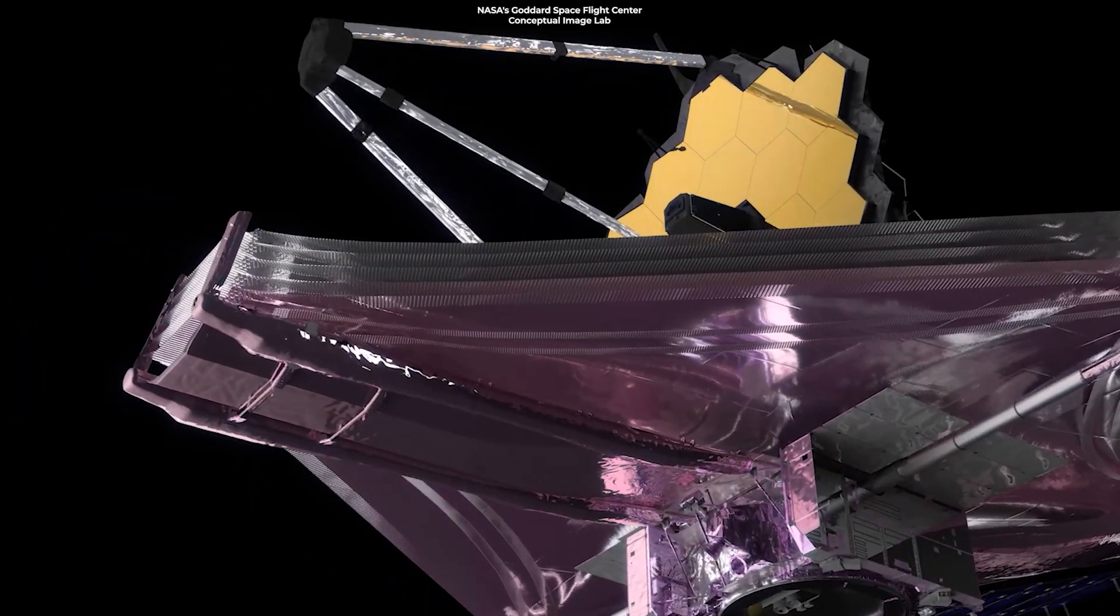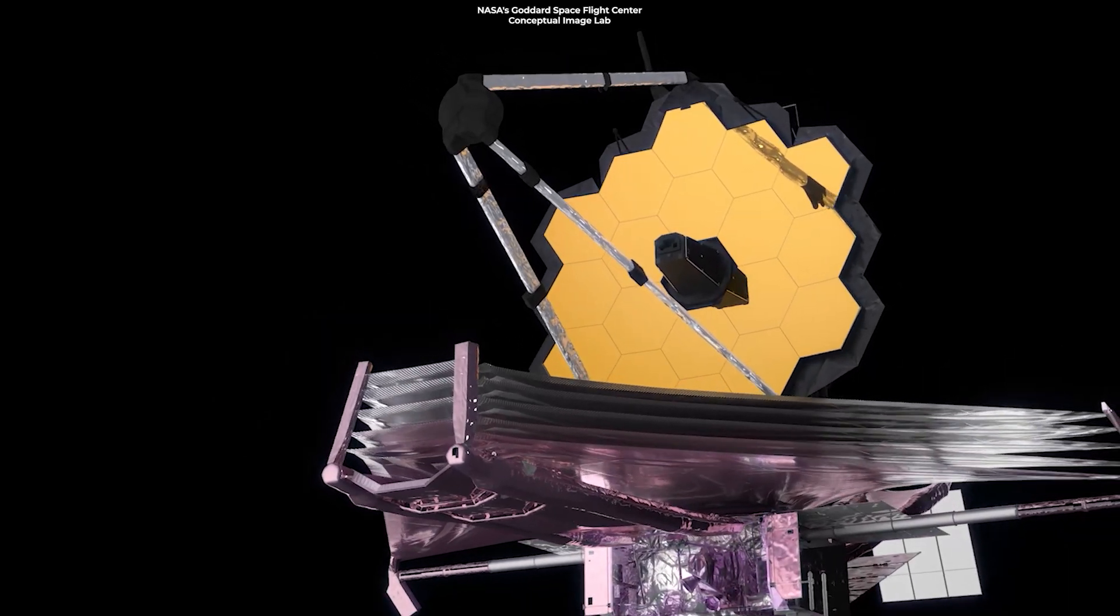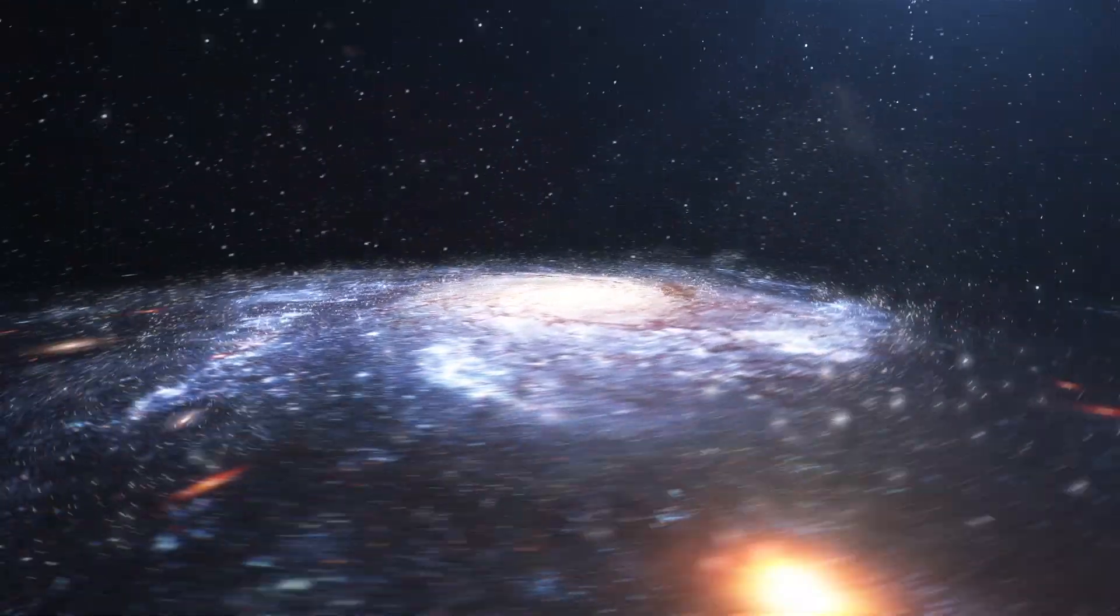Webb brings us the goodies again. This time, it's imaged some of the oldest ever found barred galaxies that resemble our own Milky Way.